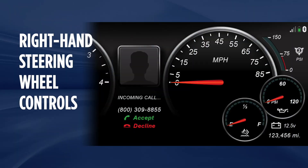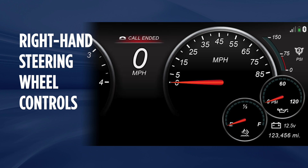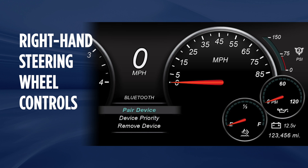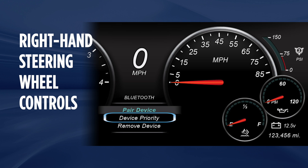OptiView also integrates with your phone, displaying battery life and network signal strength. To connect to Bluetooth, select Bluetooth under the Vehicle Configuration menu. There, you can pair a new device, change a device's priority, and delete devices.